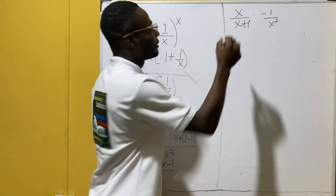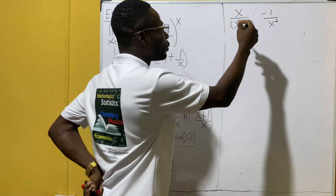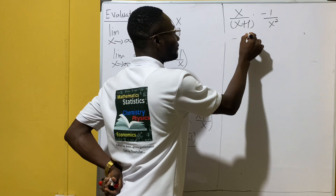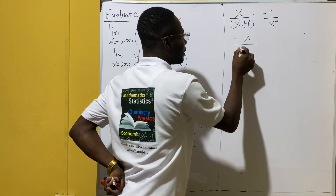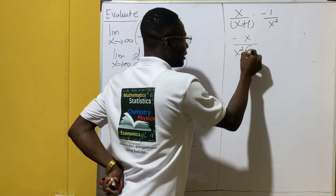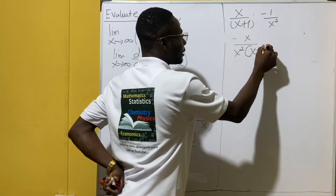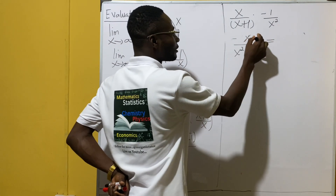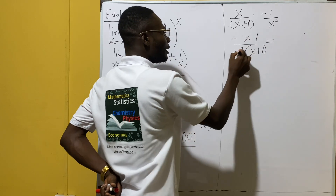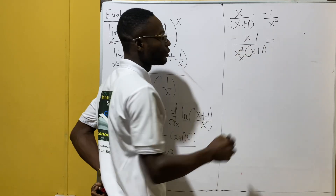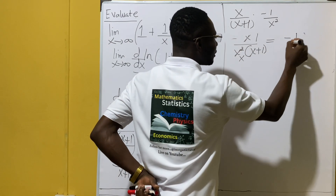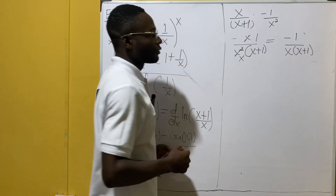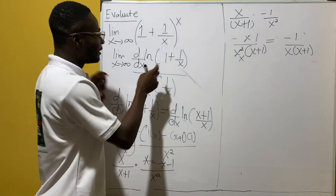When we multiply through, this gives us negative x over x squared times (x+1). This simplifies to give us negative 1 over x(x+1). So this is the differential of the numerator.